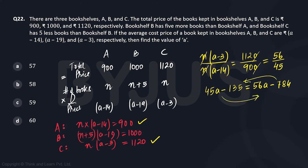So if we rearrange, we will have 11a = 784 - 135, which is going to be 649. So a = 59, and C is the correct option.